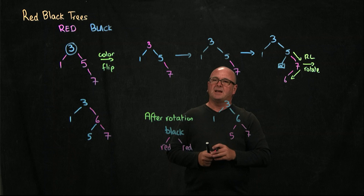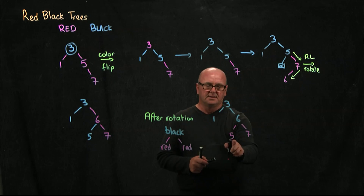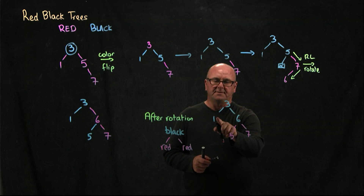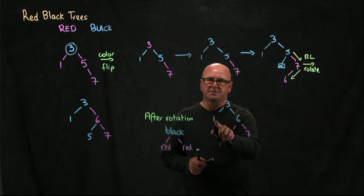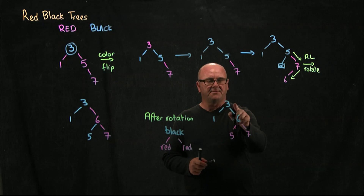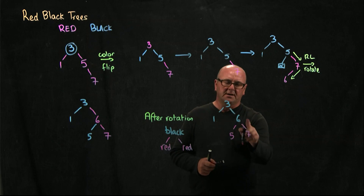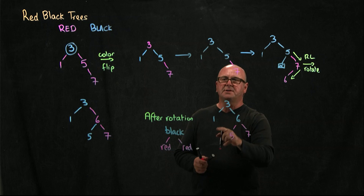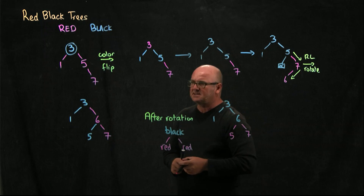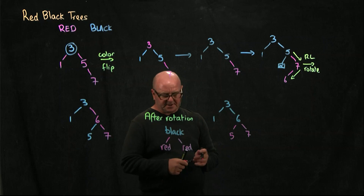Is that a valid red-black tree? We have two black nodes going down the left, two black nodes going down the right, and no consecutive red nodes. So yes, that's a valid red-black tree.